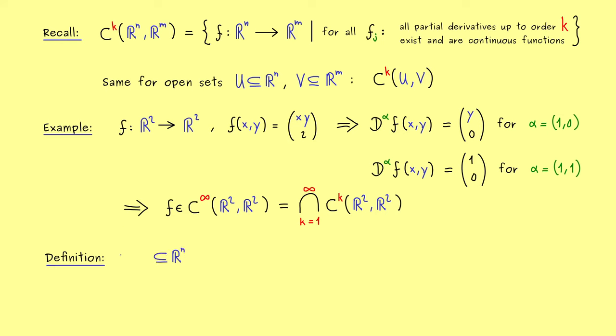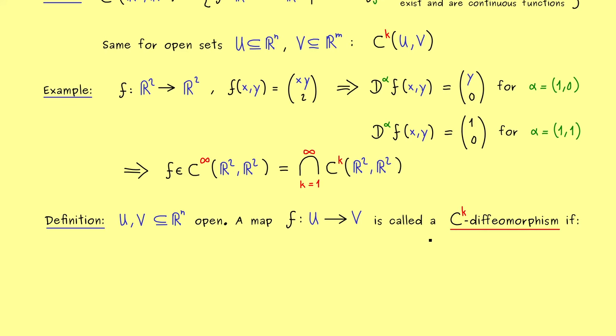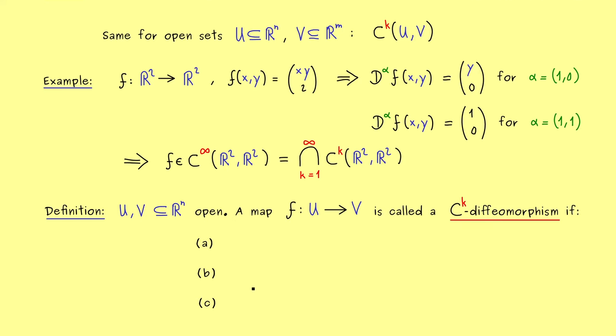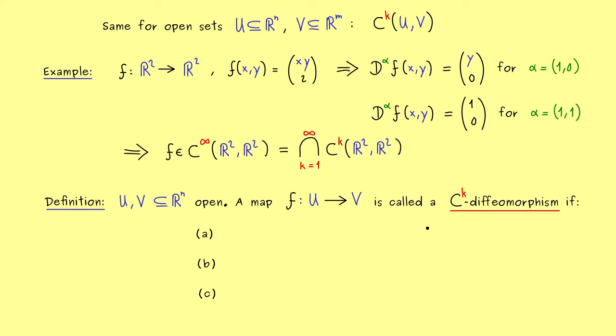The first thing we need here are two open sets, U and V, but now both in R^n. And then we call a map f from U into V a C^k diffeomorphism if we have three properties fulfilled. So you see, we already distinguish in the name how good the diffeomorphism is. And obviously, the best one would be the C^∞ diffeomorphism. Ok, then let's write down the three properties. And obviously first, we want that f is a C^k function.